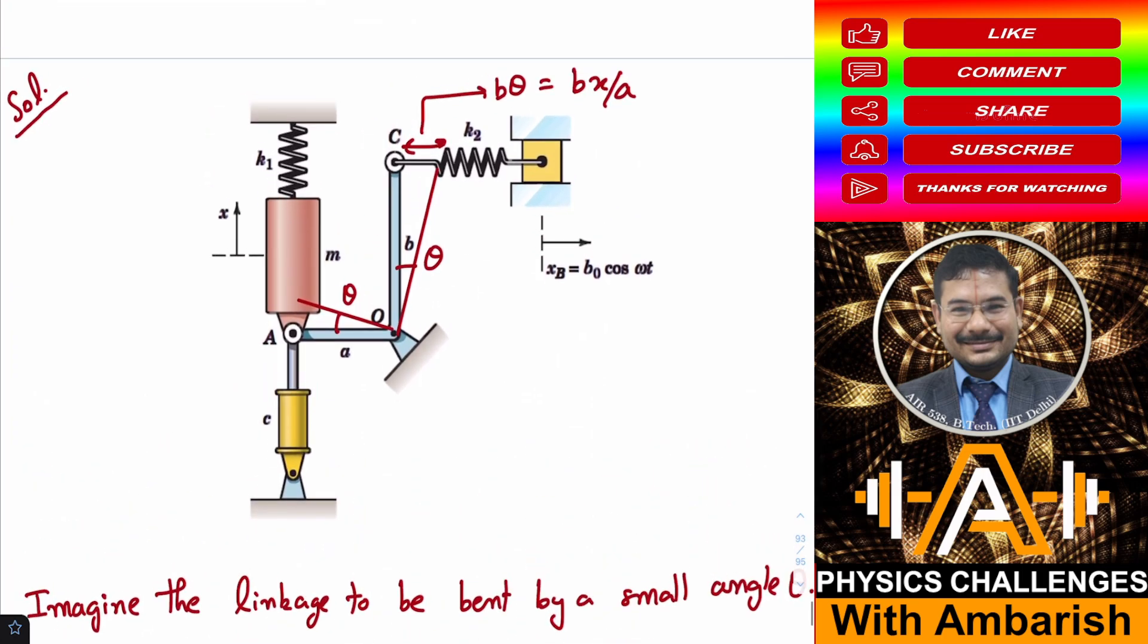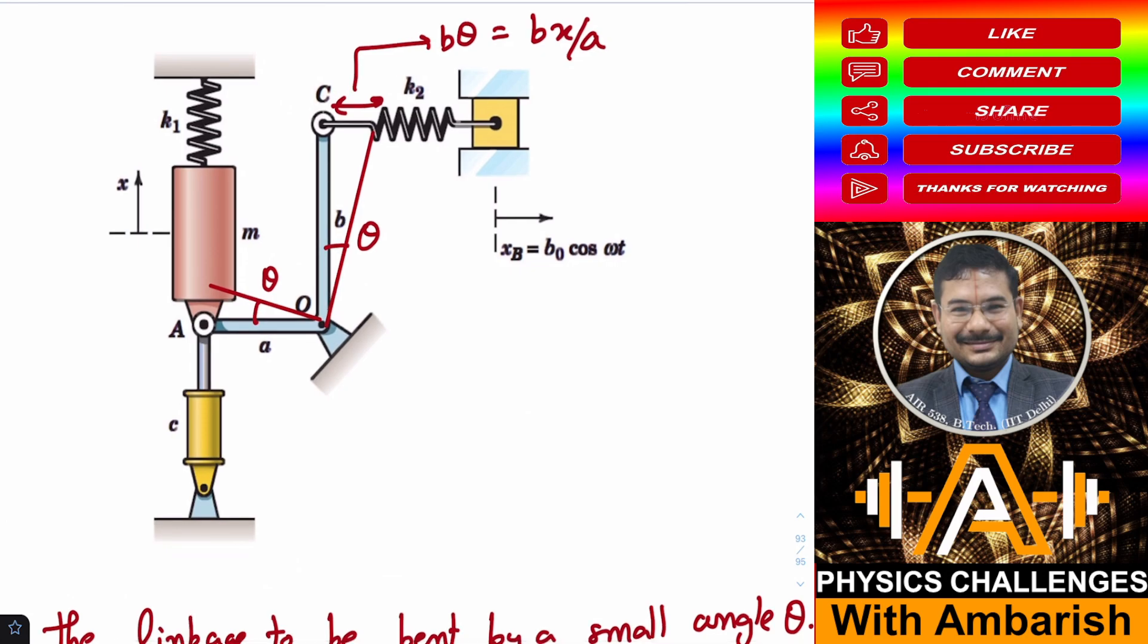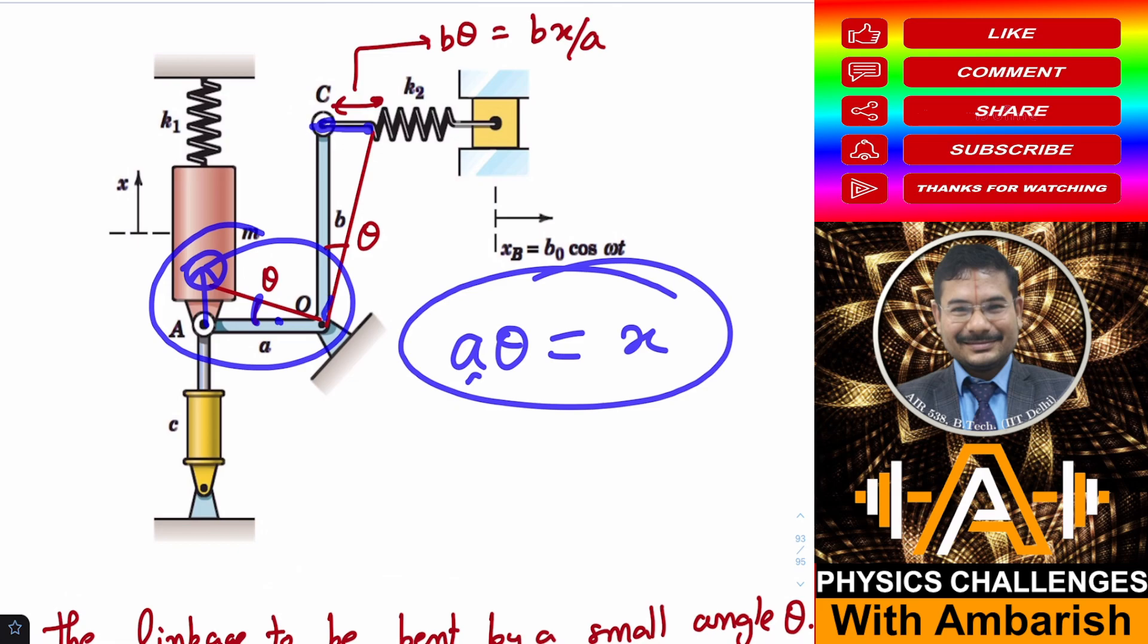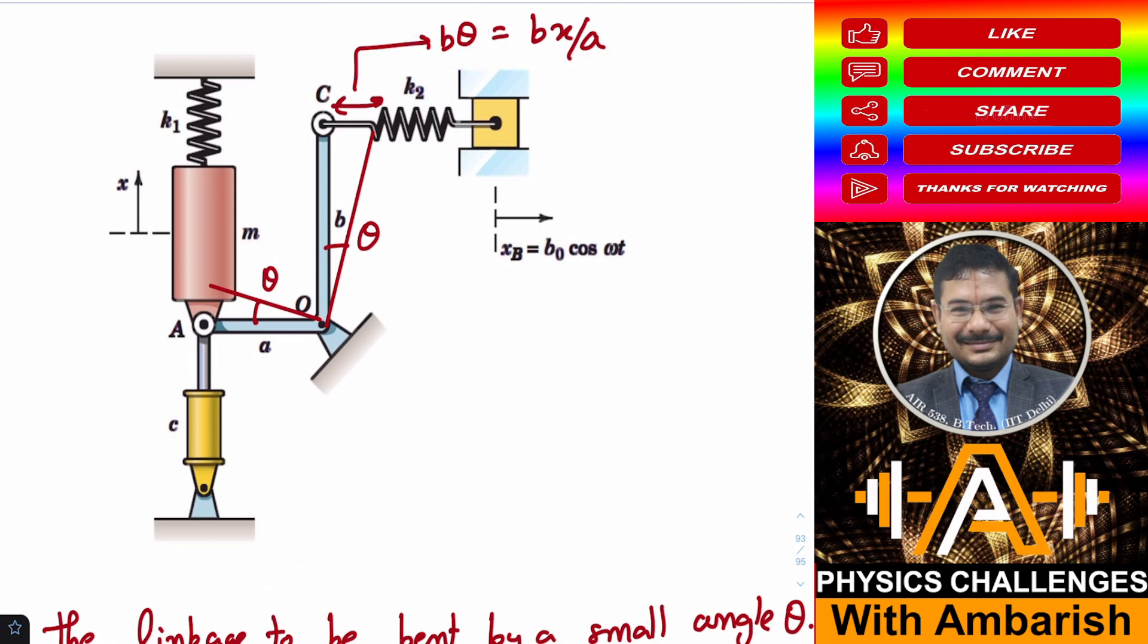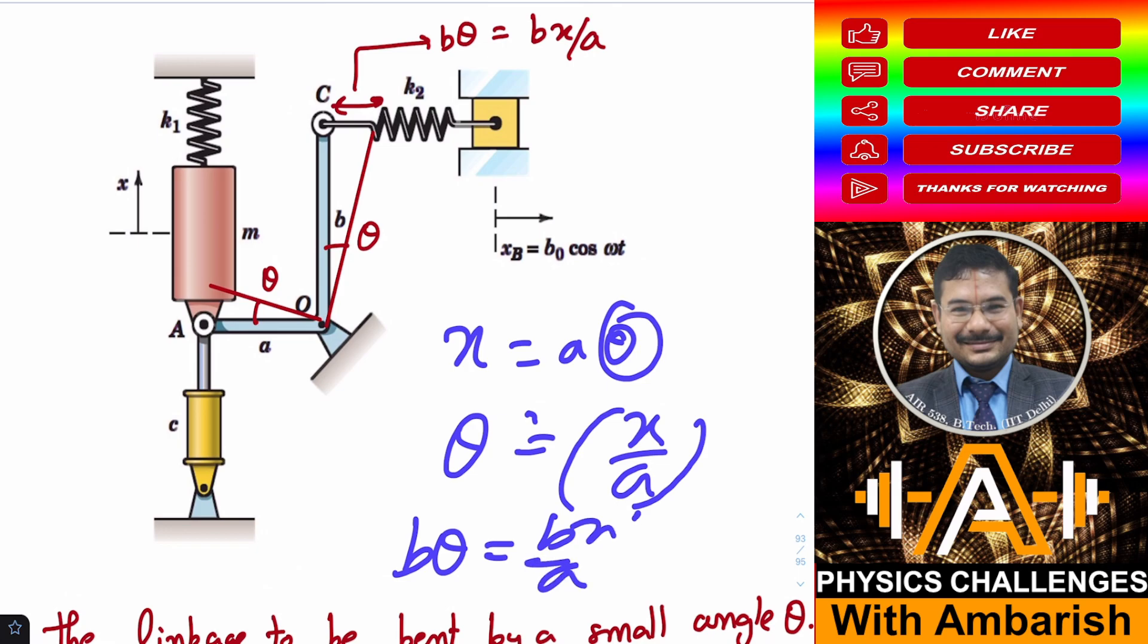Let's have a look at the dynamics. At some instant, this lever has turned through some angle theta. If this angle is theta, then of course this angle is also theta. The vertical rise is A theta and A theta we are calling as X. This goes down by B theta. Since X is A theta, we can say that theta is X by A, so B theta simply becomes B X by A. That's the linear displacement of the left end of the spring, B X by A.